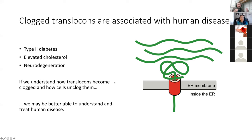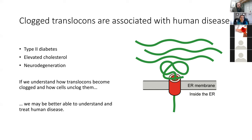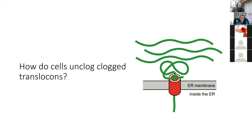If we can learn how translocons become clogged in the first place and how cells unclog them, we may be able to better understand and treat human disease. This is the central question of my research lab: how do cells unclog clogged translocons? To study this, we stage clogging proteins in the translocon and monitor how long it takes cells to identify and destroy those translocon-clogging proteins. It's kind of like sending in old jalopies that you know are going to break down, to study how well a city handles cars that have broken down in a tunnel.